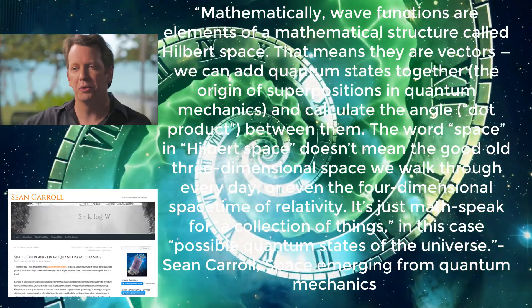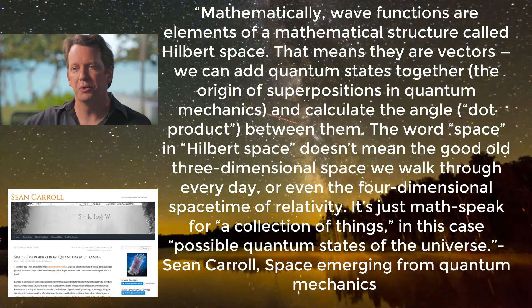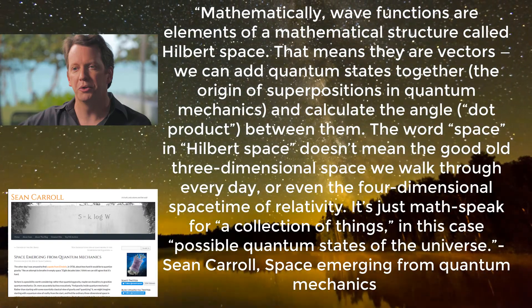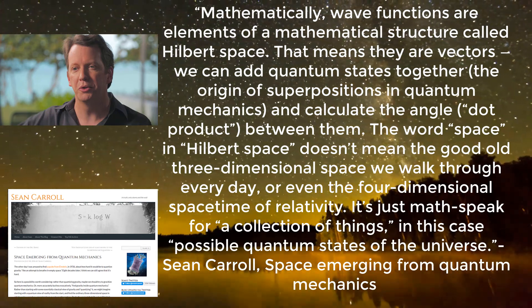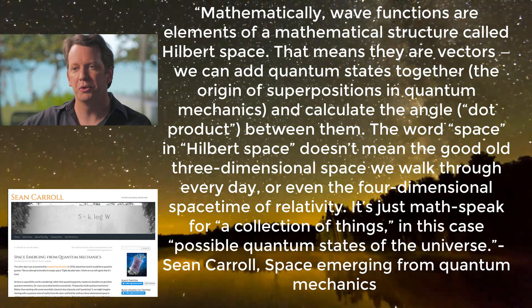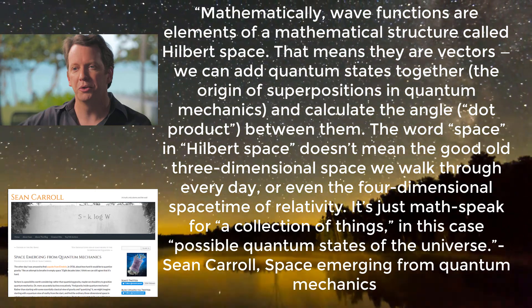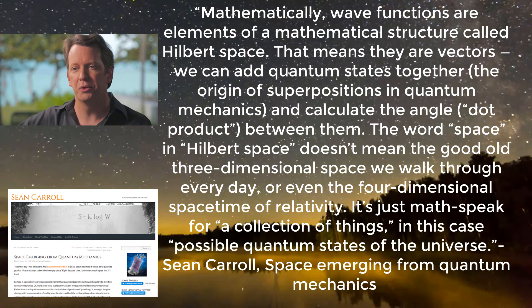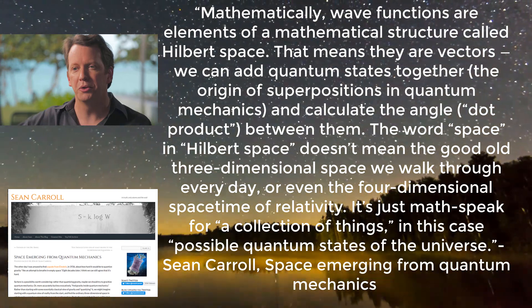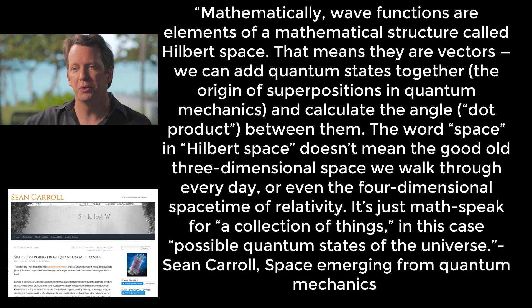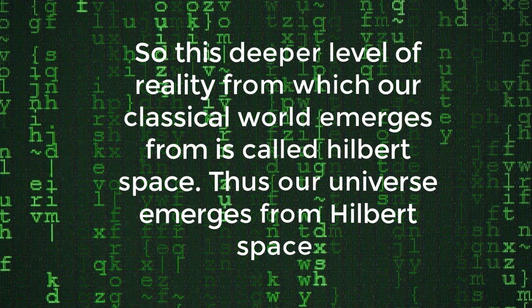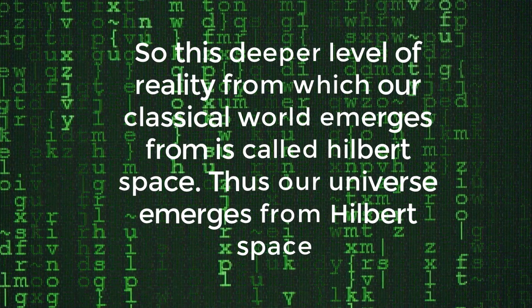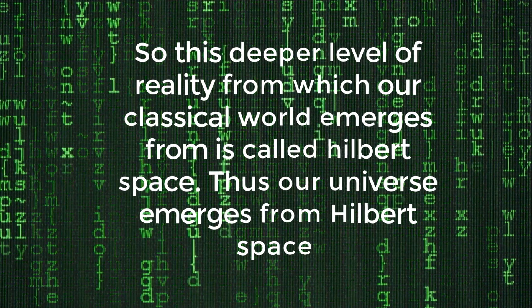Mathematically, wave functions are elements of a mathematical structure called Hilbert space. This means that they are vectors. We can add quantum states together and calculate the angle between them. The word space in Hilbert space does not mean the good old three-dimensional space we walk through every day, or even the four-dimensional space-time of relativity. It is just math-speak for a collection of things, in this case, possible quantum states of the universe. So, this deeper layer of reality from which our classical world emerges from is called Hilbert space. Thus, our universe emerges from Hilbert space.